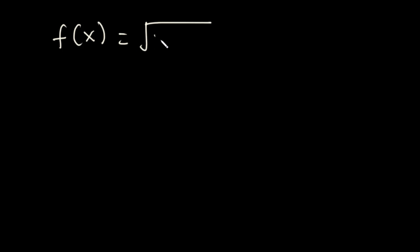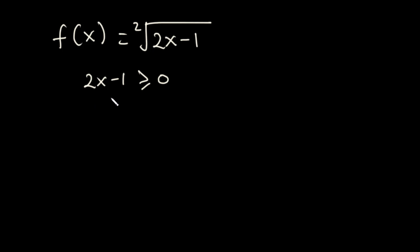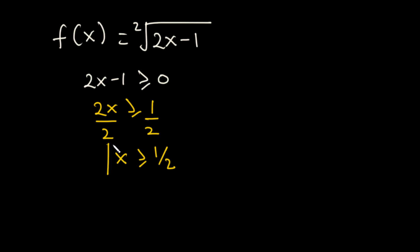Now how do you find the domain of a function with a square root? Say f of x is equal to the square root of 2x minus 1. If the function has a square root with an even index, we set what's inside to be greater or equal to zero: 2x minus 1 is greater or equal to zero. Transposing, 2x is greater or equal to 1, then dividing both sides by 2 gives x is greater or equal to 1 over 2.